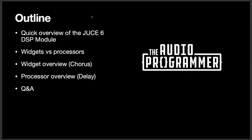Here's an outline of what we're going to talk about today. We're going to give an overview of the JUCE DSP module. In the JUCE DSP module, you have widgets and you have processors. We're going to talk a little bit about the differences between those two. Then I'm going to show you a very quick overview of how you would make a quick widget and another one where you would make a very simple processor. And then we're going to have a Q&A. So this is more almost of a lightning talk — it shouldn't take very long.